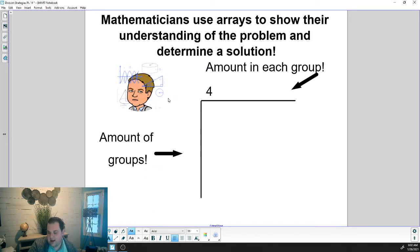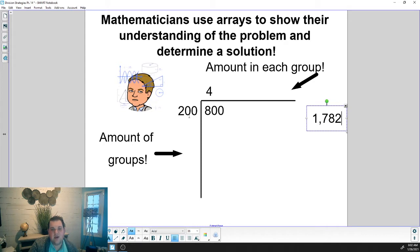I'm going to get us started and make 200 packs. I know if I make 200 packs of four, 200 times four is 800. So I'm going to continue until I get to 1,782 because that's how many cards he has. So I've gotten you started.